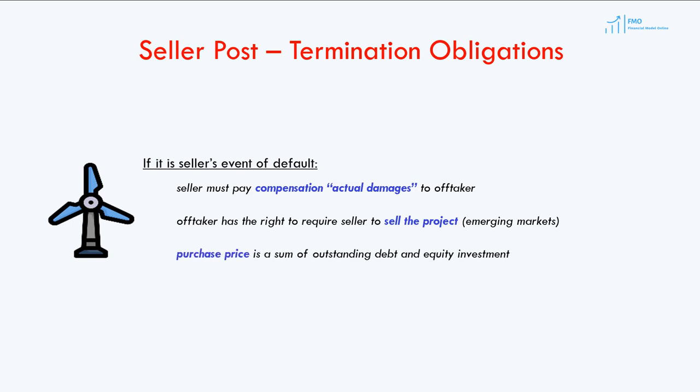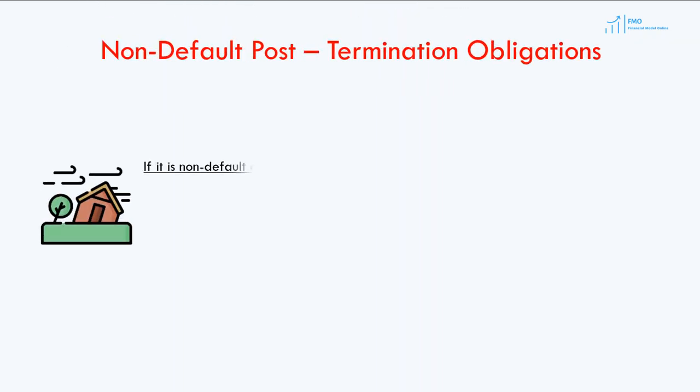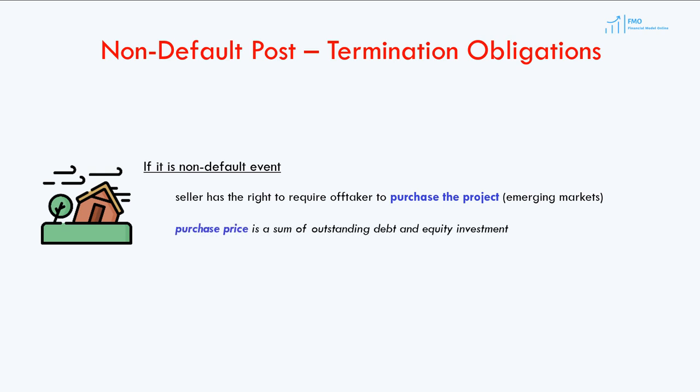The purchase price in this scenario typically consists of the outstanding debt and equity investments made into the project. If the PPA is terminated because of a force majeure event, the energy seller has the right to require the off-taker to purchase the project. The purchase price in case of force majeure termination includes outstanding debt and, sometimes subject to negotiations, may also include equity investments made into the project.